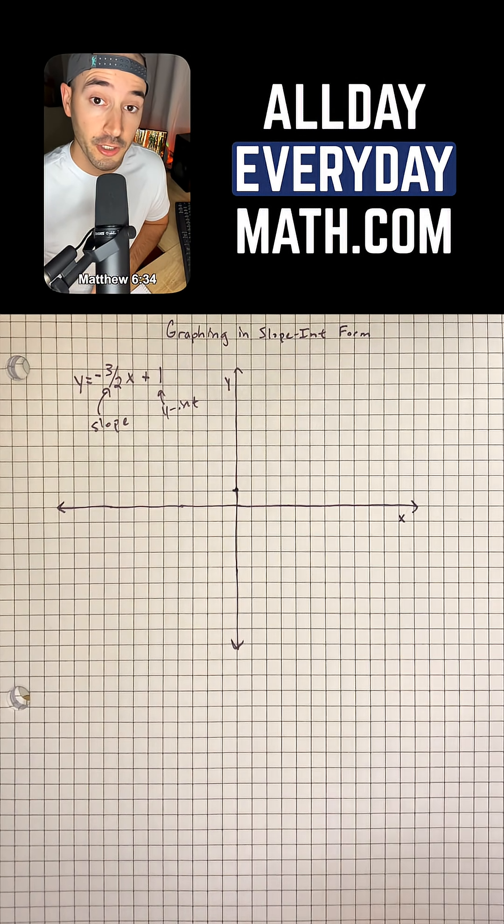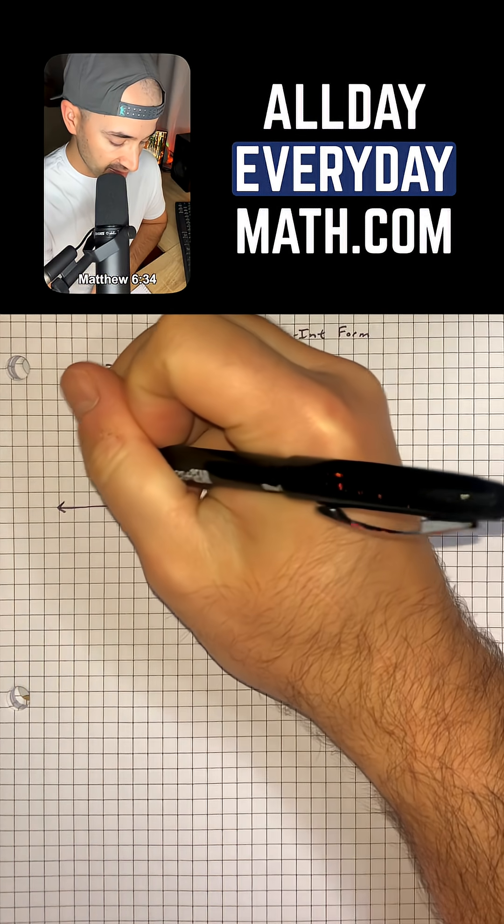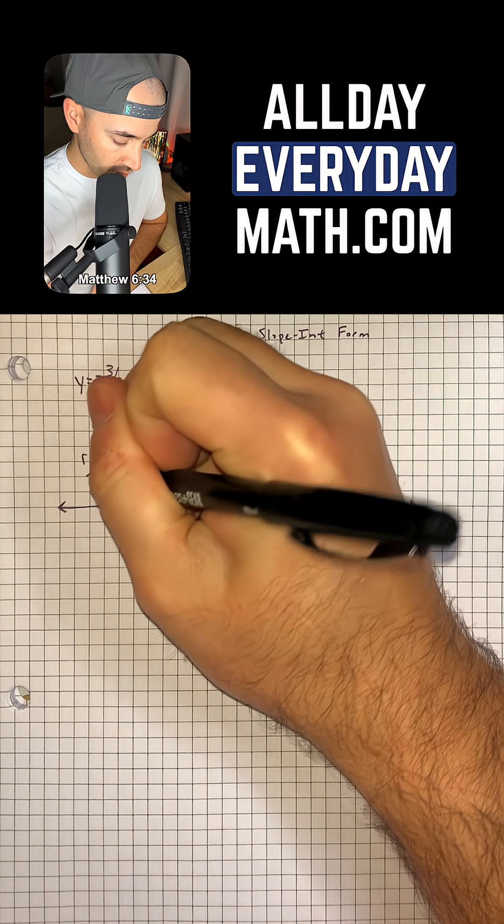Then we're also going to use our slope, which is negative 3 over 2. Remember that slope is the same thing as rise over run.